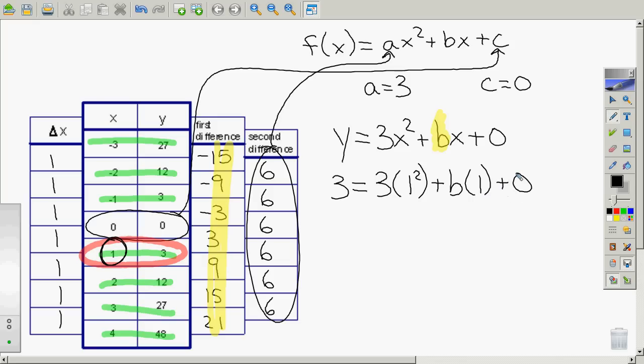Now if we just clean that up a little bit, we get 3 equals, 3 times 1 squared is just 3, plus b times 1 is just b, and 0 we can just leave off. And then we just subtract 3 from both sides, simple one-step equation, and we end up with b must be 0.